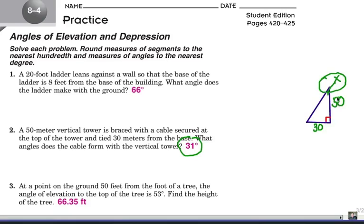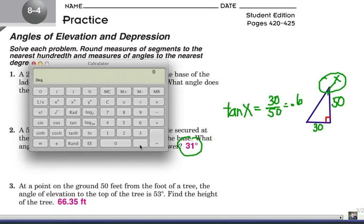Now what trig function are we going to use? The 50 represents the adjacent leg, the 30 represents the opposite leg, so that is going to be tangent. So tangent of our x angle is going to be opposite over adjacent, 30 over 50, which is 0.6. Now let's grab our calculator and do the inverse tangent function. Input 0.6, I'm going to hit the shift button and find tangent minus 1, that's the inverse tangent.